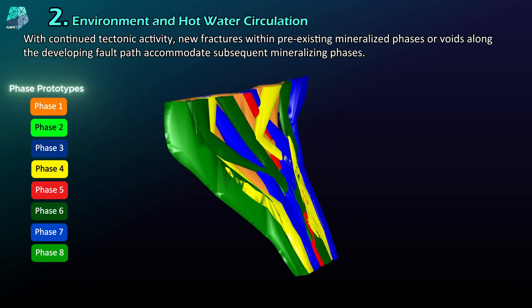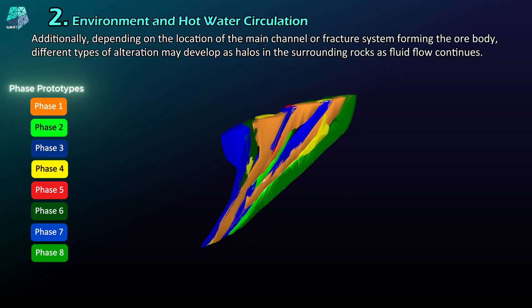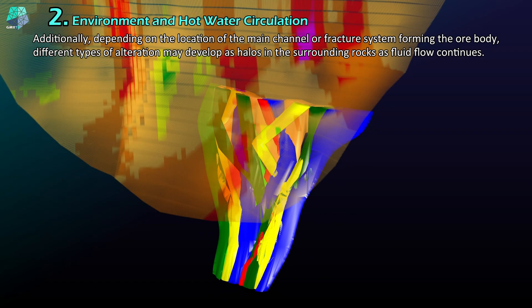Additionally, depending on the location of the main channel or fracture system forming the ore body, different types of alteration may develop as halos in the surrounding rocks as fluid flow continues.